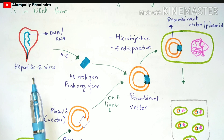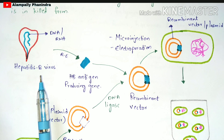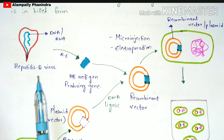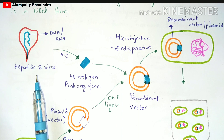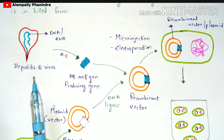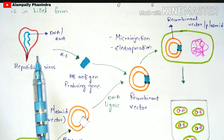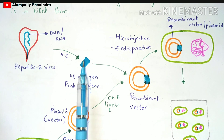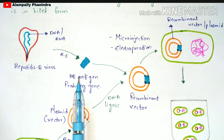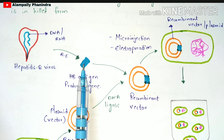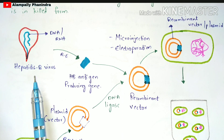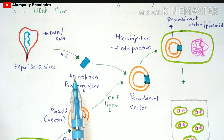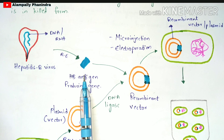In every type of virus there is a presence of genetic material — the genome — which may be either DNA or RNA. From this genetic material, you have to obtain the hepatitis B antigen producing gene, also called the HB antigen producing gene. This is a small strand obtained from the genetic material of hepatitis B virus and it plays a major and vital role in the production of the vaccine.